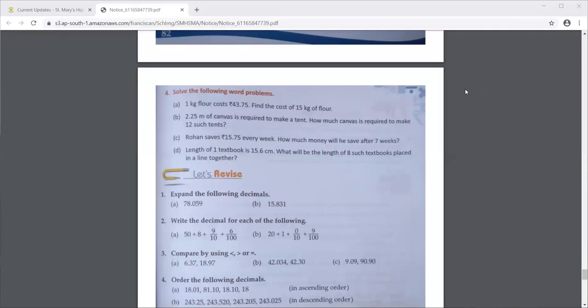Now the last, length of 1 textbook is so many centimeters. What will be the length of 8 such textbooks placed in a line together? So 1 textbook, the length is 15.6 centimeters. So they are saying, if you are keeping 8 such textbooks in 1 line, 1 after the other.